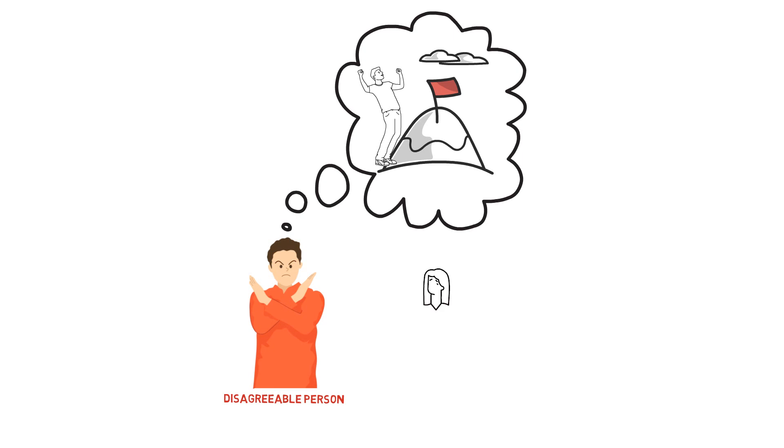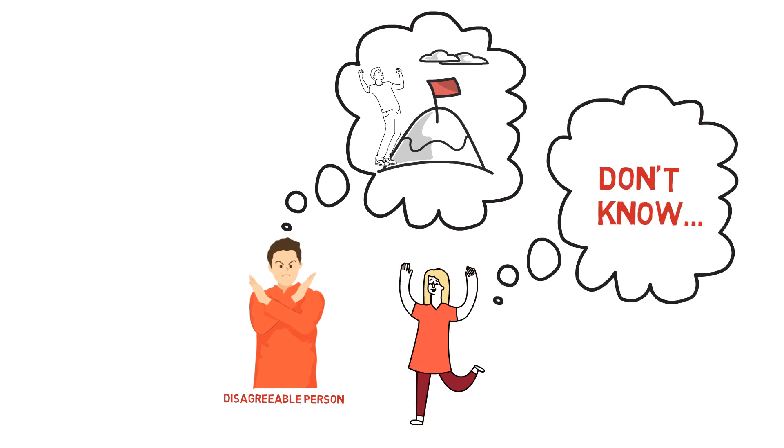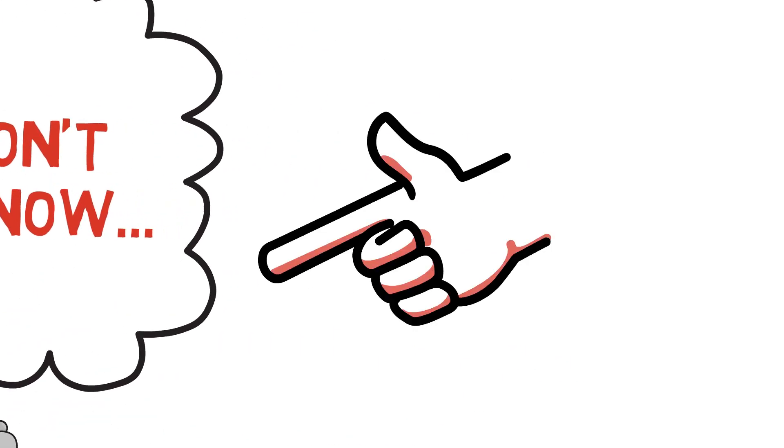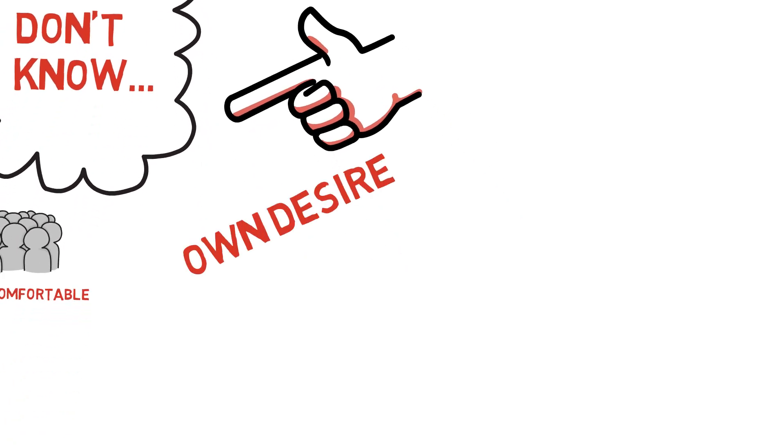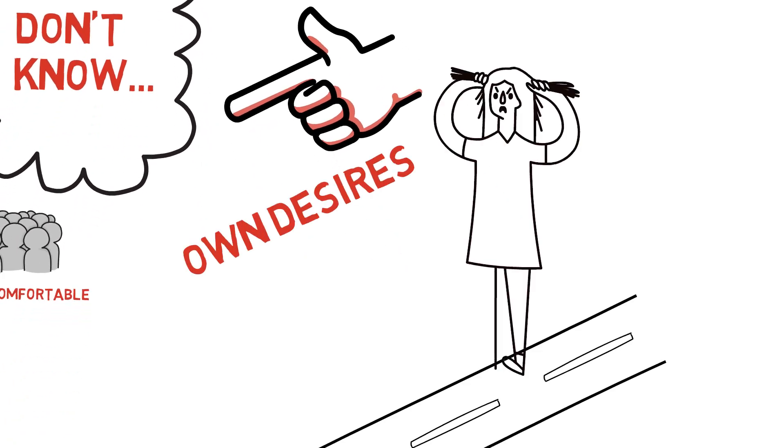But agreeable people, especially if they're really agreeable, are so agreeable that they often don't even know what they want. Because they're so accustomed to living for other people and finding out what other people want and trying to make them comfortable and so forth. It is harder for them to find a sense of their own desires as they move through life.